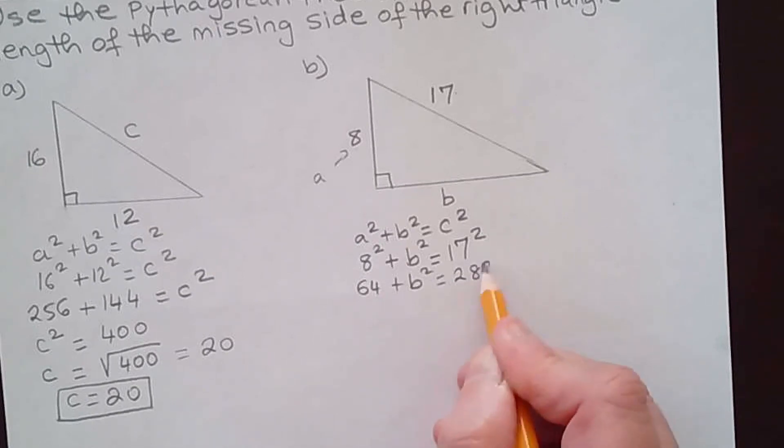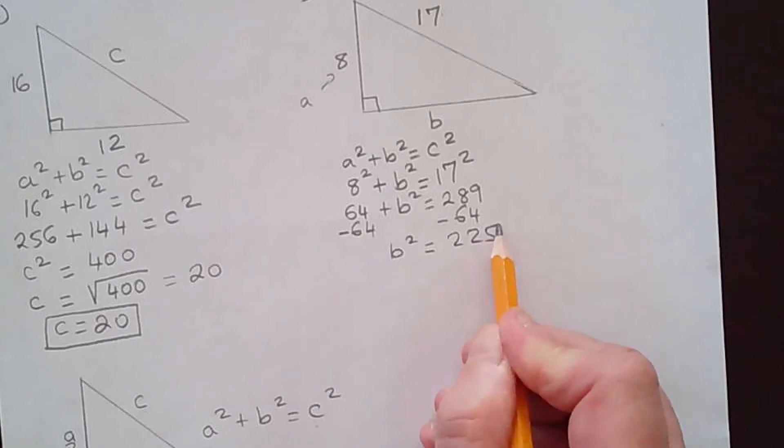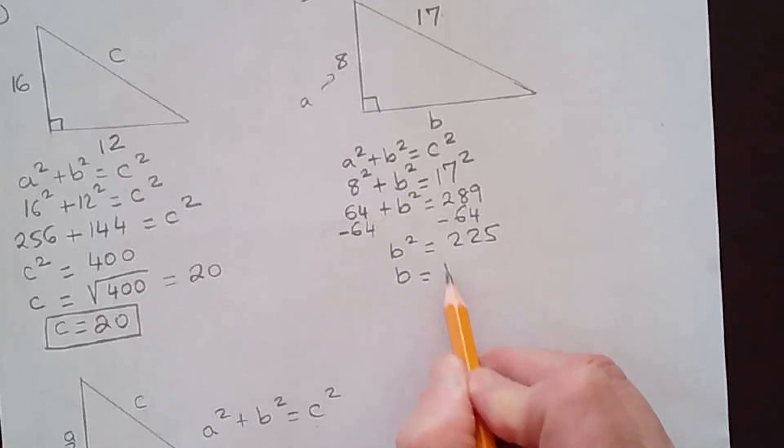We're solving for b, so we need to subtract 64 on both sides of the equation. This cancels out and we're left with b² = 289 - 64, which is 225.